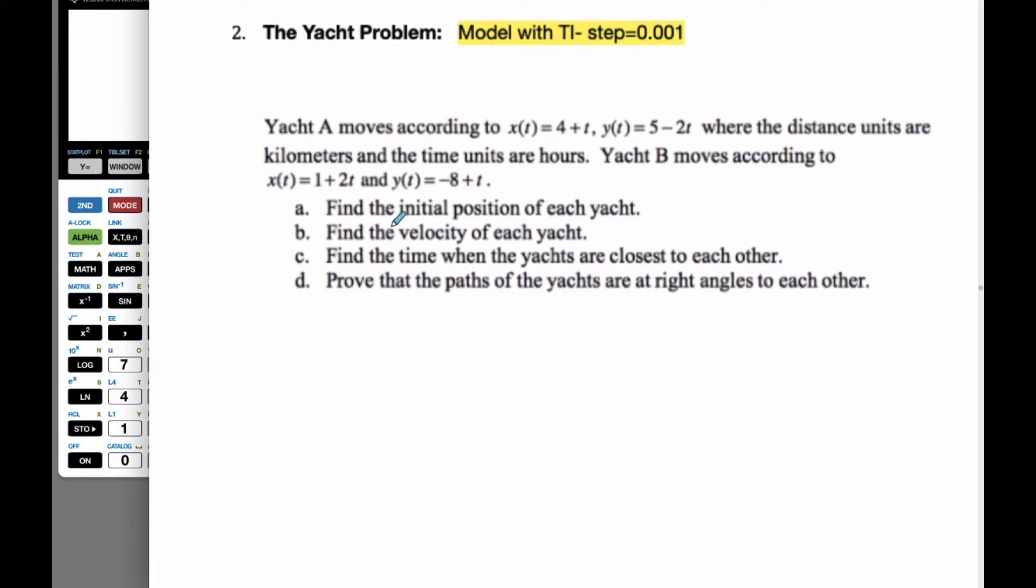And so it wants to know the initial position of each yacht. Well, if I'm going to talk about yacht A, I'll make the vector equation for A, and I know it's going to be (4, 5) plus T times (1, -2).